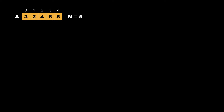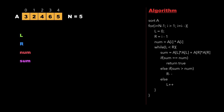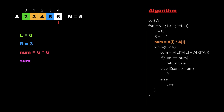Now let's have a look at the approach to solve this problem. Consider the same example where the size of the array is 5 and the array elements are 3, 2, 4, 6, 5. We declare a few variables namely l, r, num, and sum. The algorithm first sorts the array in ascending order, then runs a for loop from i = n-1 down to i > 1, iterating from the last element to the third element. We calculate l as 0 and r as i-1, and num as a[i] × a[i], which is 36. Then we run a while loop for the condition l < r.